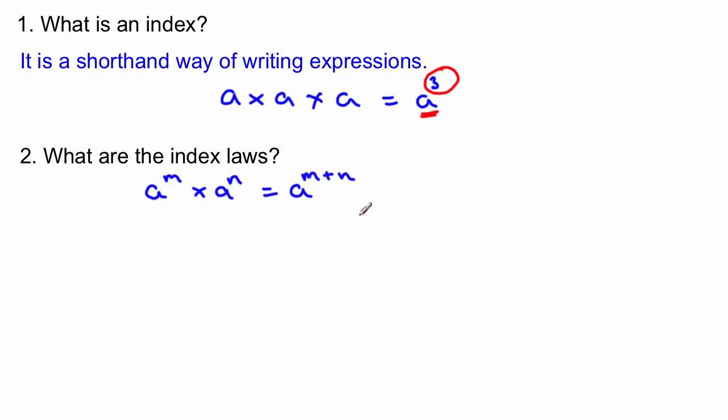then we take the indexes and we add them together. Now I'll go through some examples using these and talk it through later but let's just remember what they are or outline what they are to start with. If we're dividing two numbers with the same bases, then the rule says that we subtract the indexes from each other.